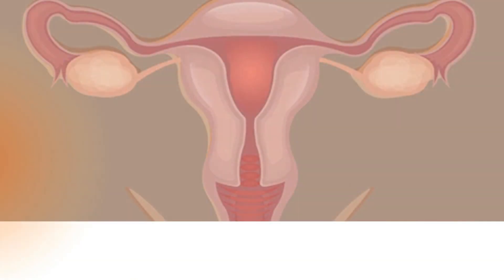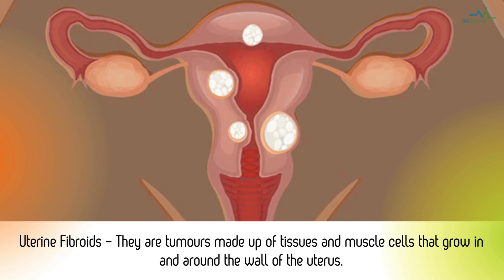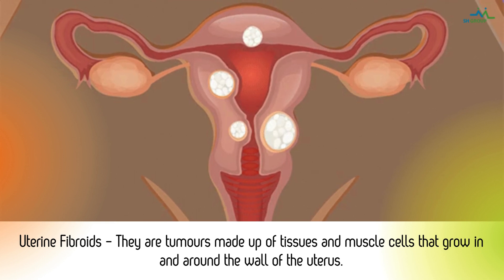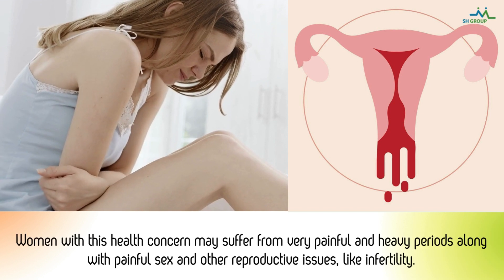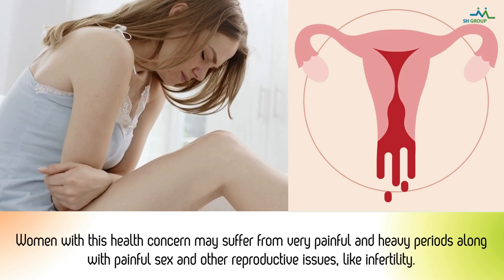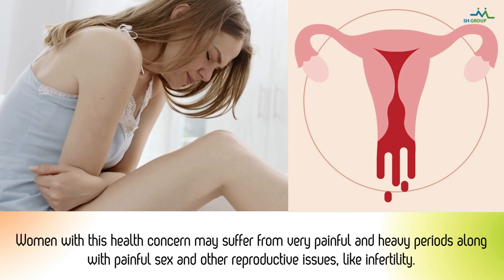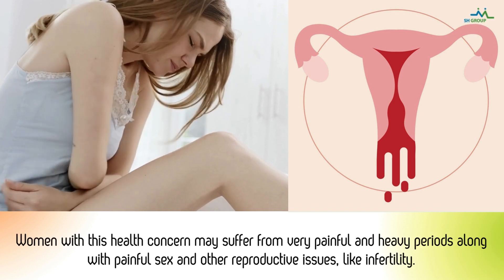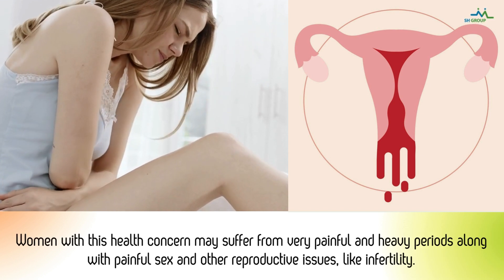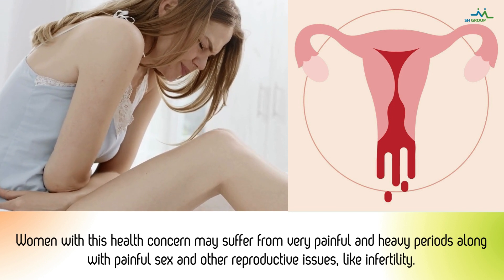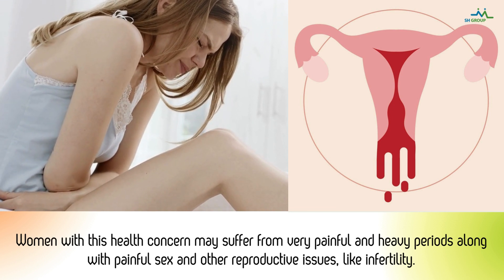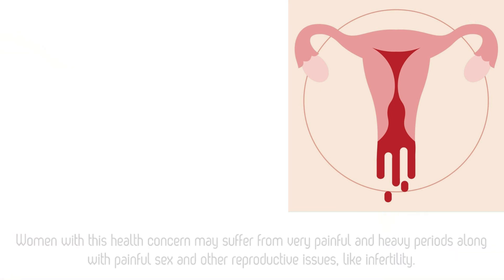Uterine fibroids are tumors made up of tissues and muscle cells that grow in and around the wall of the uterus. Women with this health concern may suffer from very painful and heavy periods, along with painful sex and other reproductive issues, like infertility.